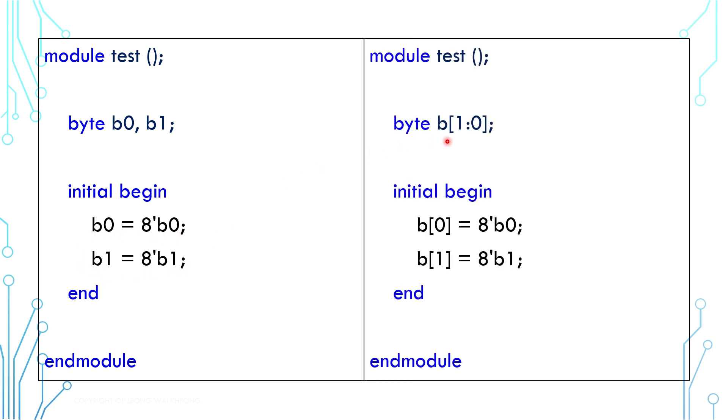The same code can be written with one array variable instead of two different bytes. In this case, the array size is 2, and every byte can be accessed using square bracket and index.